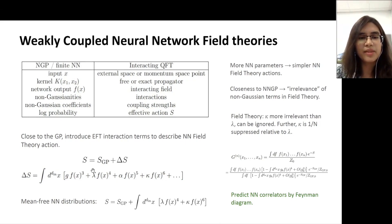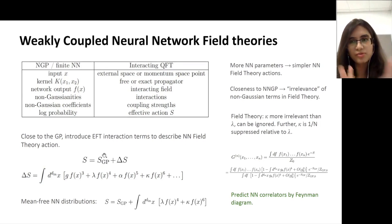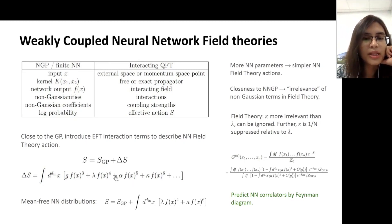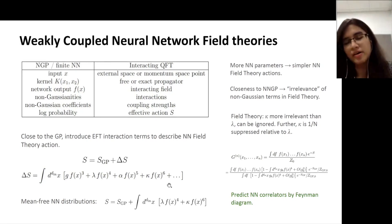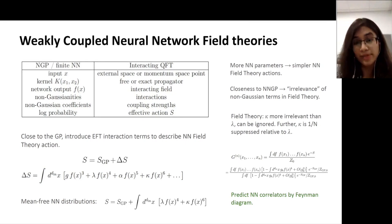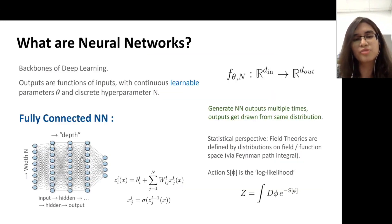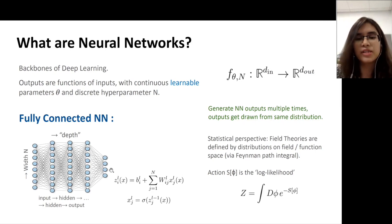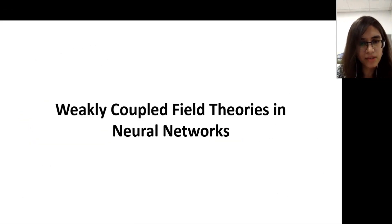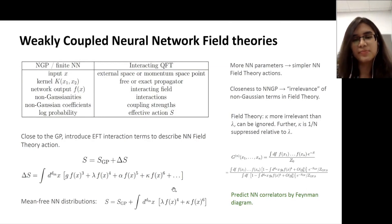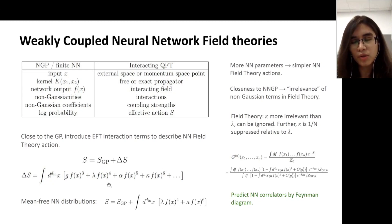The dictionary between neural networks and interacting field theories changes somewhat. The kernels are now exact propagators, no longer free propagators. The neural network outputs behave like interacting fields because there are 1/N-suppressed non-Gaussian corrections. These non-Gaussianities can be described by interaction terms, and their coefficients are equivalent to coupling strengths. The log probability or log likelihood corresponds to the effective action. We can only write down interaction terms and see which ones give the best fit experimentally.